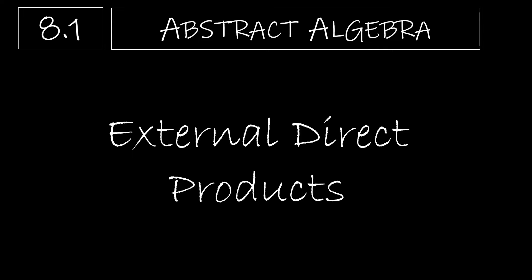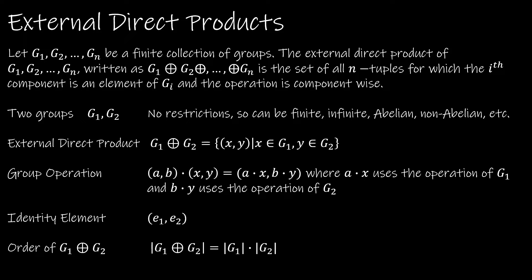Let's take a look at Chapter 8, External Direct Products. The definition in your textbook is what I have written first. It says: let G1, G2, and so forth be a finite collection of groups. The external direct product of those groups, written as G1 with a plus sign in a circle, G2, and so on, is the set of all n-tuples for which the i-th component is an element of Gi, and the operation is component-wise.